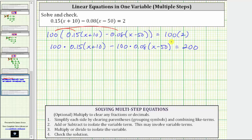Going back to the left side, 100 times 0.15 is 15, giving us 15 times the quantity x plus 10 minus 100 times 0.08 is equal to 8, giving us 8 times the quantity x minus 50 equals 200. Notice now the equation no longer contains decimals.